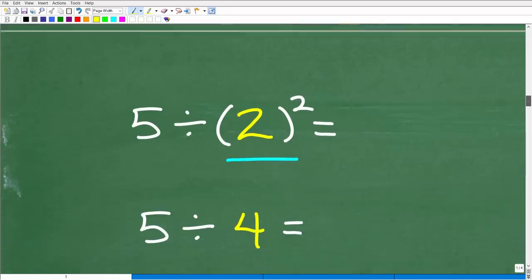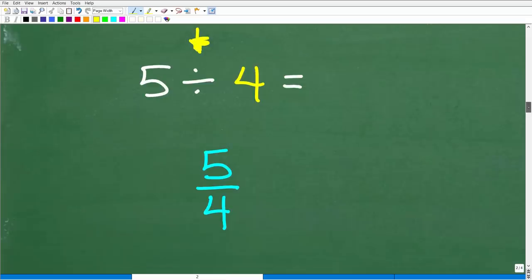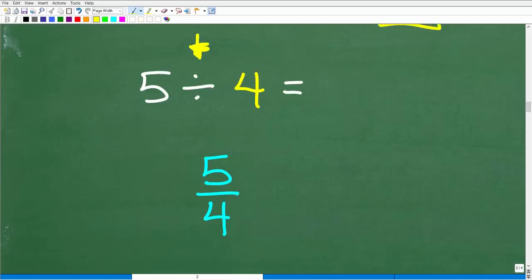But let's continue on with the problem. Okay, so here we have 5 divided by 2 squared. So, this is what we need to figure out next. So, 2 squared means what? It means 2 times 2, right? So, 2 times 2, of course, is 4. So, now we have 5 divided by 4 and there's only one other operation left to do and that's, of course, division. So, 5 divided by 4, we want to express that as a fraction.